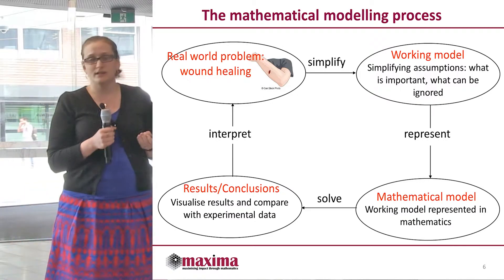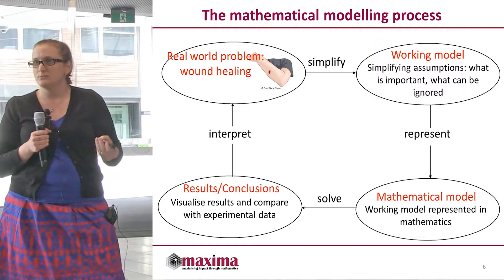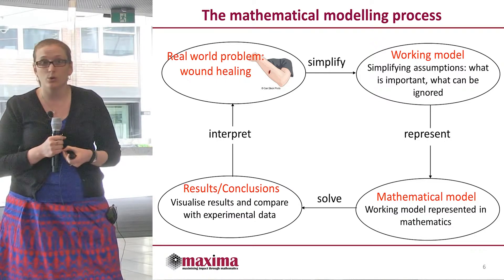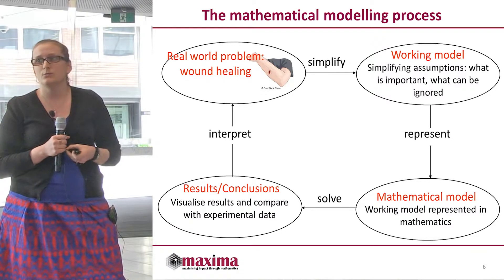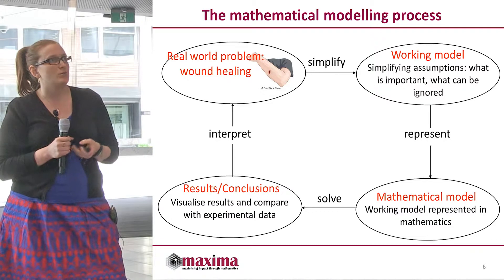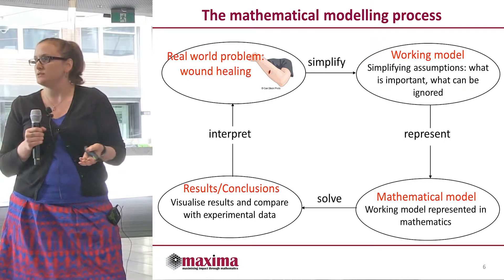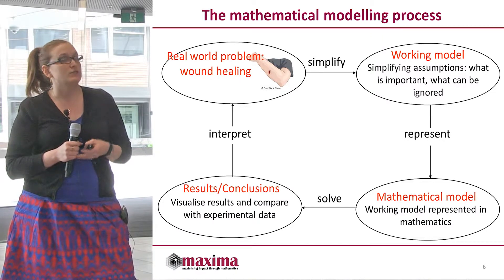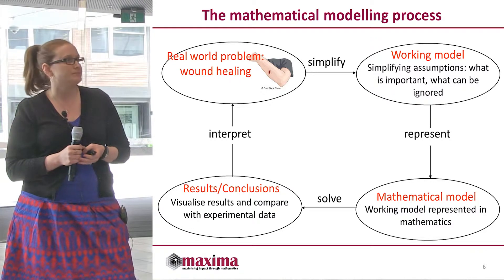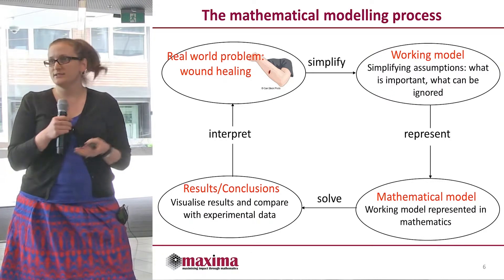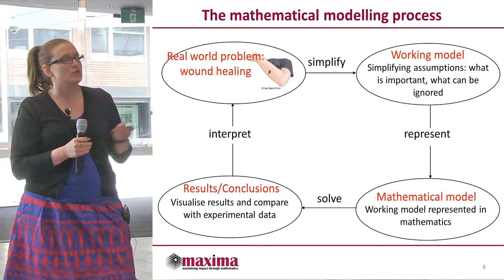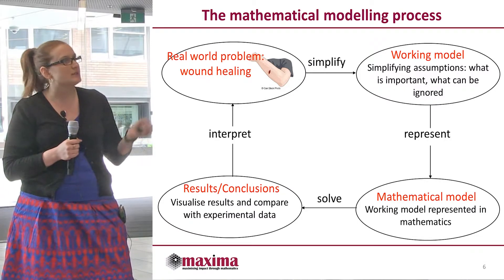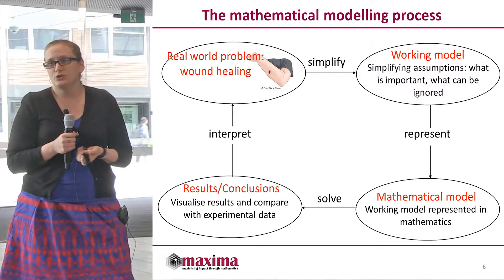The mathematical modelling process generally has four major steps. We start with our real-world problem — in my case, wound healing — and the first thing I have to do is simplify it, since the biology is too complicated to include in full. I make simplifying assumptions about what is crucial to include and what can be ignored. Once I've done that, I arrive at a working model, which then has to be represented as mathematical equations. Those equations have to be solved using computational or analytic approaches, and then you get the results of your model, which can be visualised. Those results have to be self-consistent with the original problem — if they're not consistent with experimental or clinical observations, then something was wrong in the simplifying assumptions and has to be changed, so several iterations of the entire process may be needed.